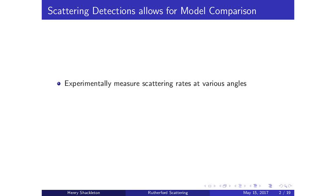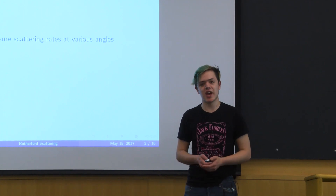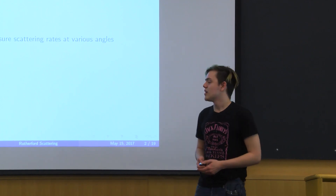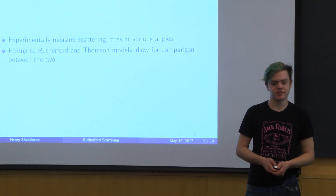These two models give us two different predictions that we can compare against actual data. We experimentally measure scattering rates at various angles and by fitting this data to both the predicted Rutherford and Thomson models, we can come to a conclusion about which one more accurately describes our results.